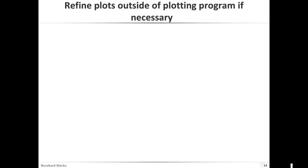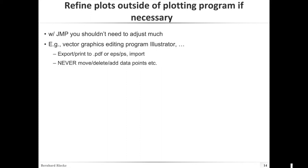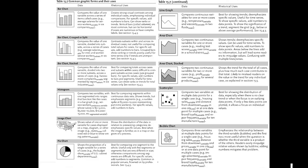Sometimes before the final version you might need to refine plots outside of the plotting software. In JMP you can do a lot already. But sometimes there are little things like adjusting colors or moving things around — though obviously never move data points. If you export to PDF, EPS, or SVG — any vector graphics format — you can use a graphics editor like Illustrator or the open-source Inkscape. But of course never change your actual data.